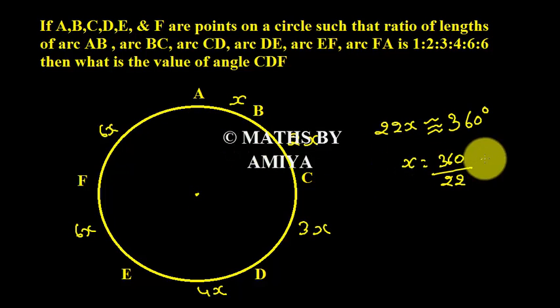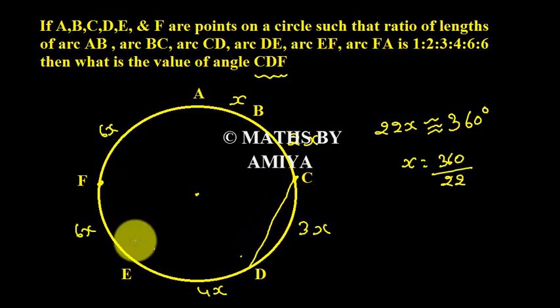This is the central angle by x when x is the length of arc. So arc AB makes angle of 360 by 22. We need to work on angle CDF.